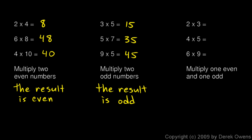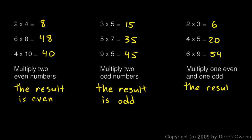Over here we have 2 — an even number — multiplied by 3 — an odd number. 2 times 3 is 6, 4 times 5 is 20, 6 times 9 is 54. In all of these cases we're multiplying one even number and one odd number, and the result is even.